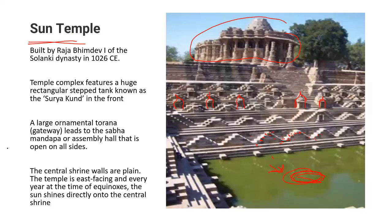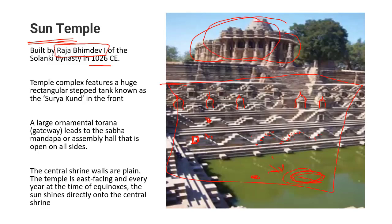The Sun Temple at Modera is very important from an examination perspective. It was built during the Solanki Rajput ruler Raja Bhimadeva I, in the year 1026 AD. A key feature of this temple is its rectangular Step Tank known as the Suryakund, where water is accessed through rectangular steps. The Suryakund is located exactly opposite to — directly in front of — the main shrine temple.